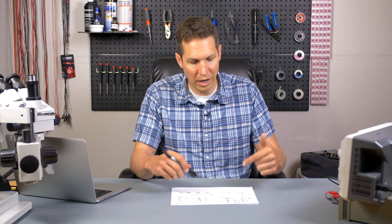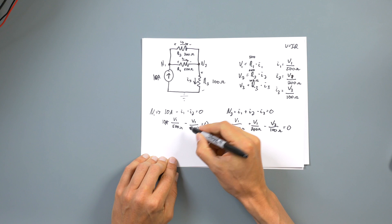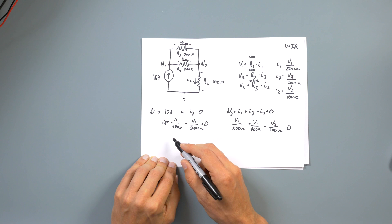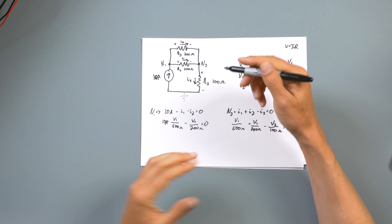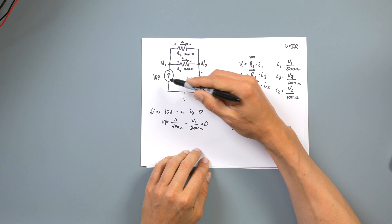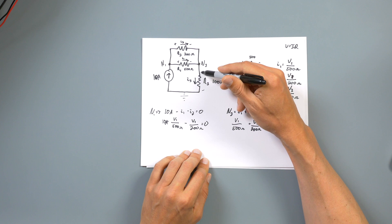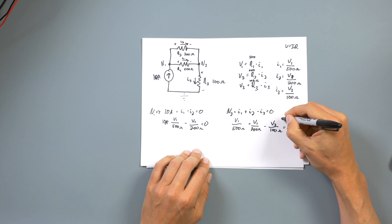The interesting thing here is we have two unknowns — V1 and V3 — and we have two equations, so this has simplified nicely. We can put the first equation in terms of V1 and solve for it. Then once we know V1, we can substitute into the second equation and solve for V3. Once we know those voltages, we can use Ohm's law to solve for the currents through R1 and R2. Also, if you haven't noticed — I3 is going to be 10 amps, because 10 amps comes in and has nowhere else to go but through R3.